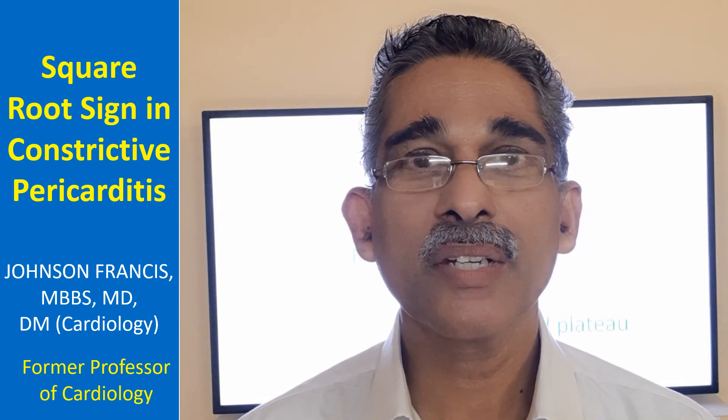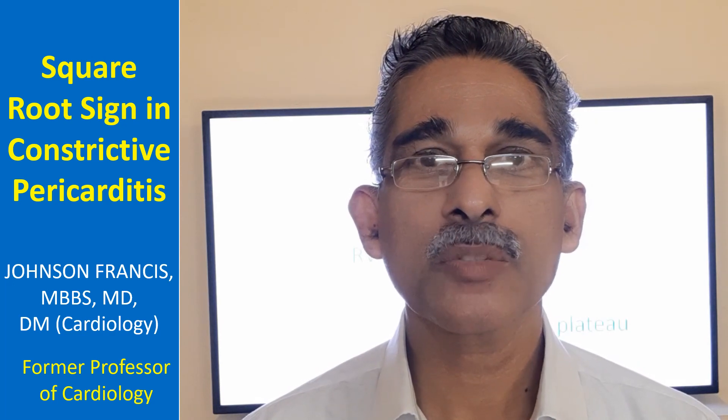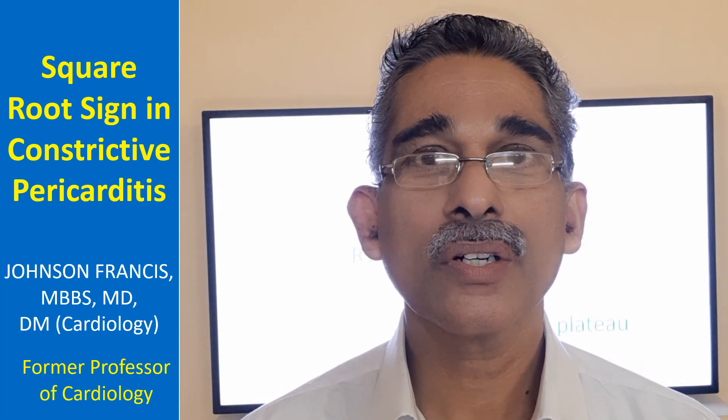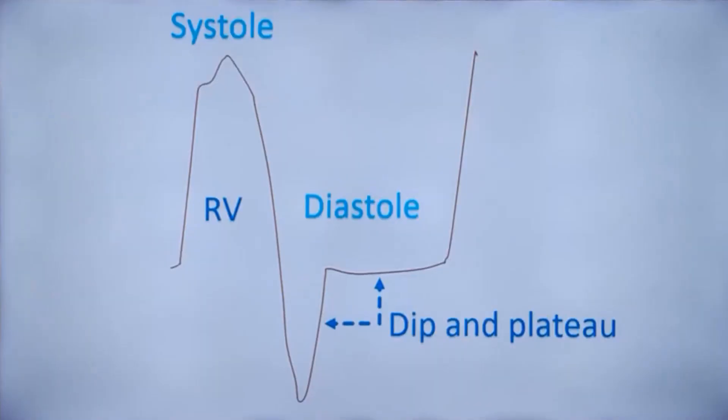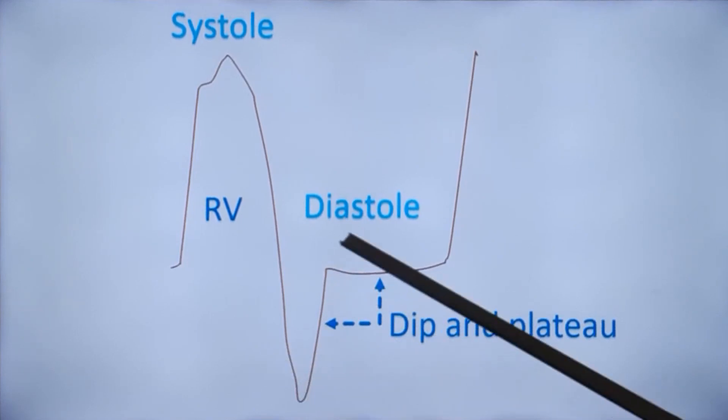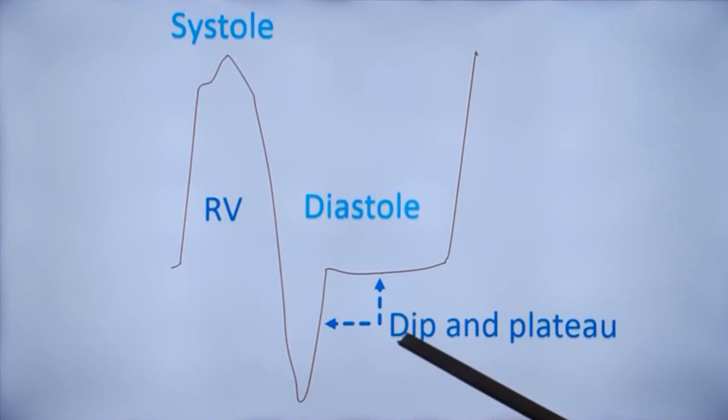This will be transmitted to the pulmonary venous pressure and systemic venous pressure, which are also equal to the elevated diastolic pressures in all four cardiac chambers. This is the square root sign or dip and plateau sign, which occurs in ventricular pressure tracing, mostly in the right ventricle.